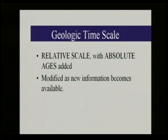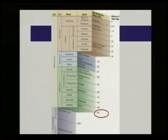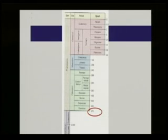As new information and new data become available, the geologic time scale is modified — it's a human filing system. One rendition of the geologic time scale lists the beginning of the Phanerozoic eon at 542 million years before the present. An older time scale, about ten years old, lists the beginning of the Phanerozoic at 570 million years ago. This is a man-made scale and we adjust it when we find data that better fits what we're trying to convey.